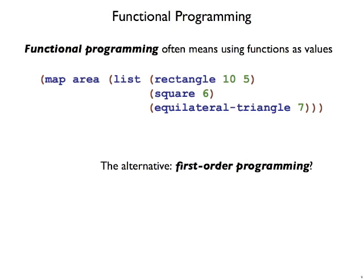And functions as values is something that's common in functional languages, and less common in other languages that predate functional programming, like C, where you have only first-order functions. You can't nest functions arbitrarily.